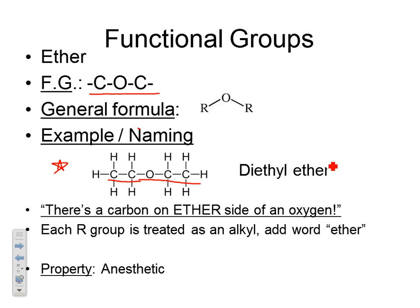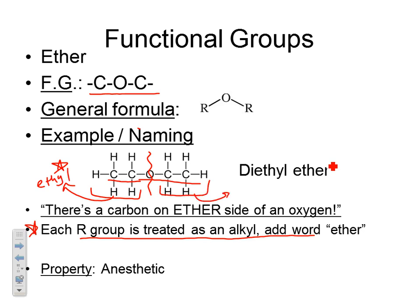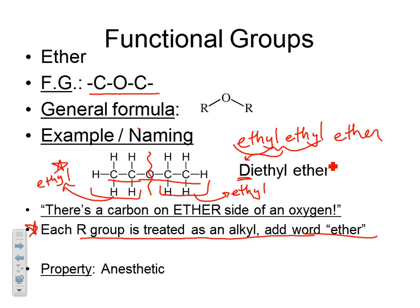To name an ether, split the chain in two at the oxygen and name each portion as if it were a substituent — each R group is treated as an alkyl group. For example, if both sides are two-carbon chains, each is called ethyl, and you add the word ether. Since both are the same, we say diethyl ether. A great way to remember an ether: there's a carbon on ether side of the oxygen. Ethers are anesthetics — breathe a little in and you'll pass out quickly.